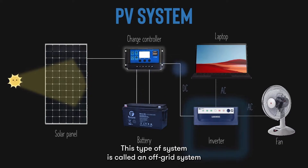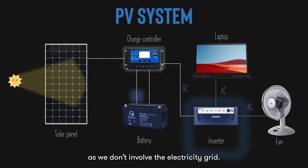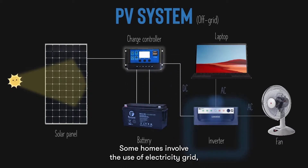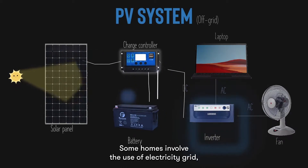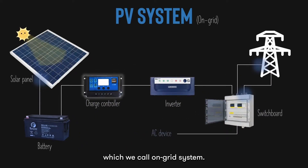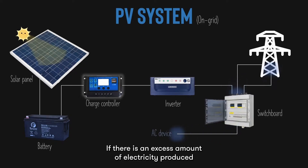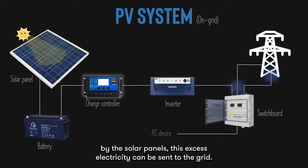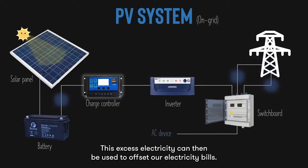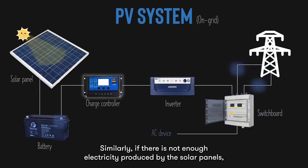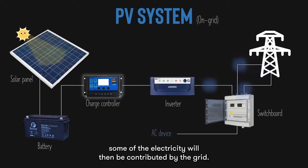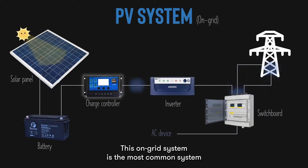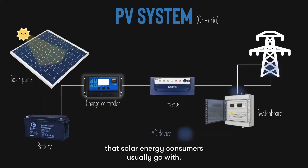This type of system is called an off-grid system, as we don't involve the electricity grid. Some homes involve the use of the electricity grid, which we call an on-grid system. If there is an excess amount of electricity produced by the solar panels, this excess electricity can be sent to the grid to offset our electricity bills. Similarly, if there is not enough electricity produced, some will be contributed by the grid. This on-grid system is the most common system that solar energy consumers usually go with.